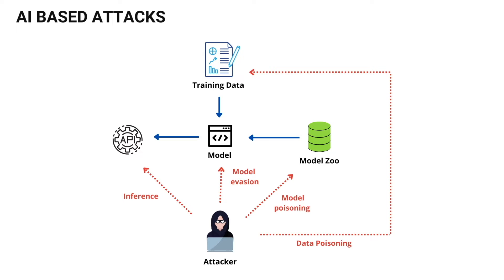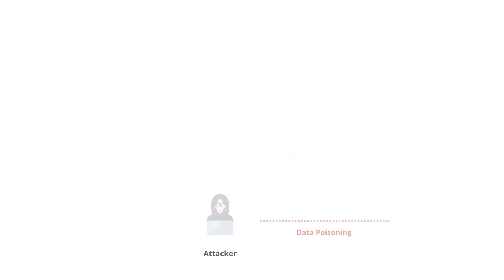Apart from that, attackers can do what's called model evasion, which is feeding the model some incorrect, slightly altered data, and the model will give a completely incorrect decision based on that. And the last attack is inference, which is basically data extraction — tricking the model into giving you more data than you thought possible.